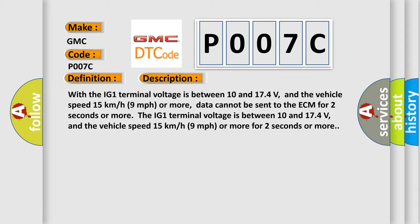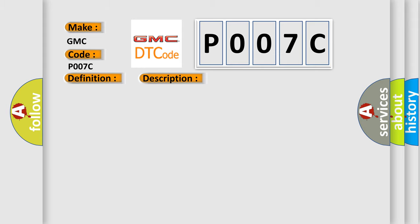The IG1 terminal voltage is between 10 and 17.4 volts, and the vehicle speed 15 km/h (9 mph) or more for 2 seconds or more. This diagnostic error occurs most often in these cases: CAN Communication System.